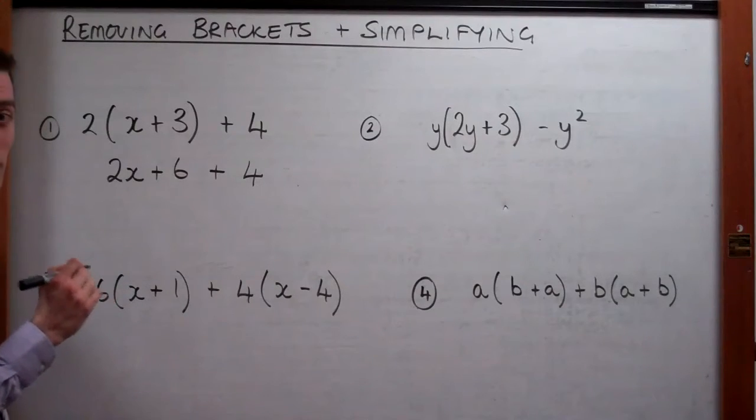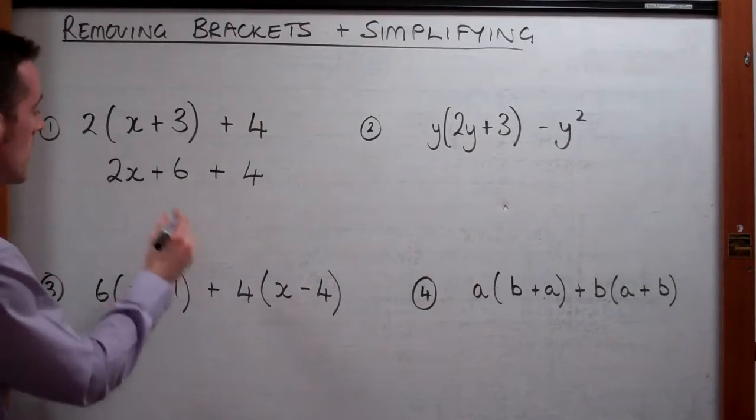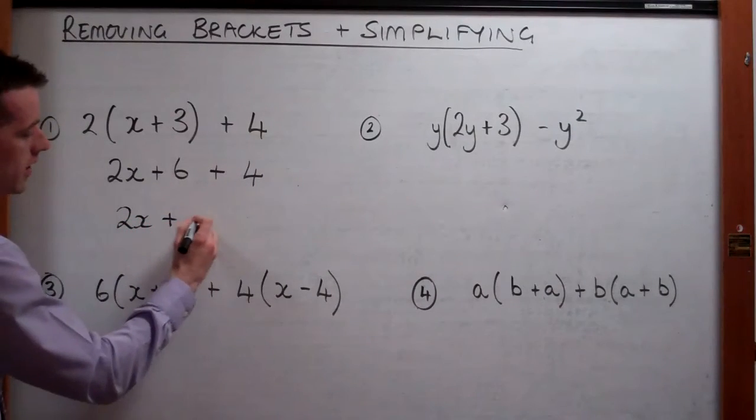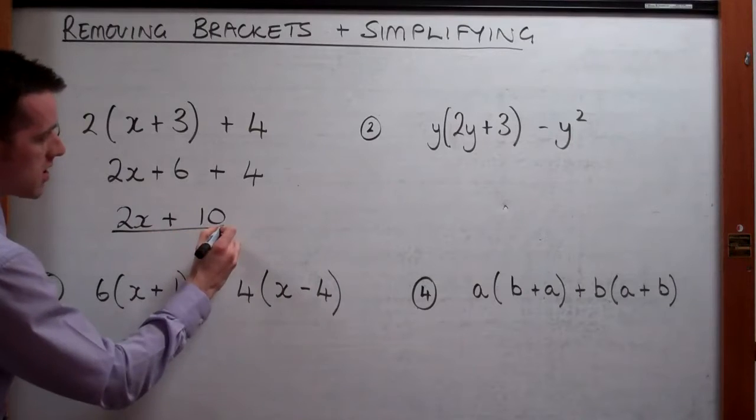Sorry about that interruption, the janitor doesn't know we're flipping the classroom here. So what we need to do next is we add the 6 and the 4 together to give us 10. So that's a very simple example.